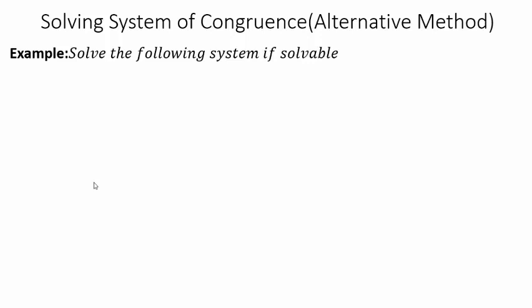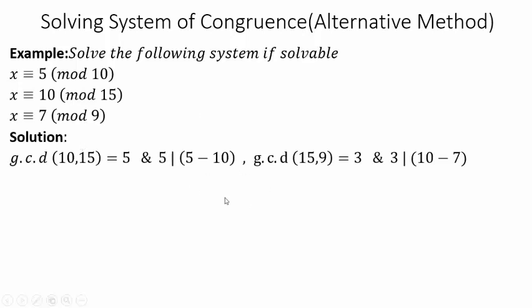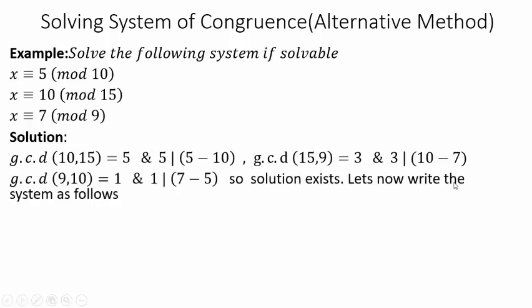Now let's look at an alternative method — we reduce the system to one where the Chinese Remainder Theorem can be applied. Consider the system X ≡ 5 mod 10, X ≡ 10 mod 15, X ≡ 7 mod 9. We check: GCD(10, 15) = 5 divides 10 − 5 = 5 ✓; GCD(15, 9) divides 7 − 10 ✓; GCD(9, 10) = 1 divides 7 − 5 ✓. System is solvable.